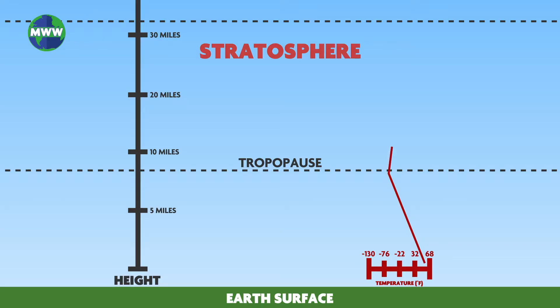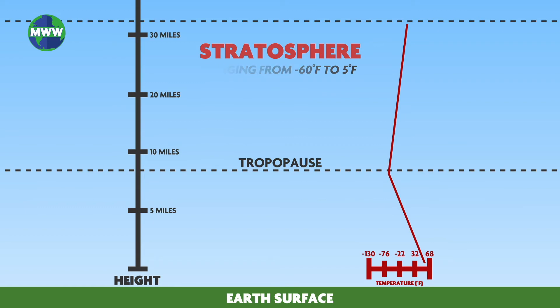In the stratosphere, temperature increases with height, even though it is still very cold, ranging from negative 60 degrees Fahrenheit at the tropopause to 5 degrees Fahrenheit at the top of this layer. The stratosphere warms due to heat produced by the formation of ozone.